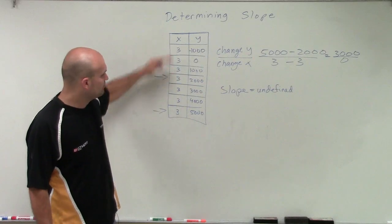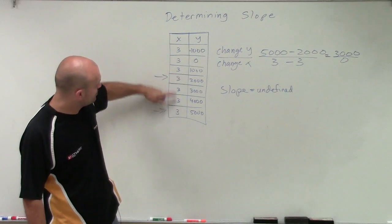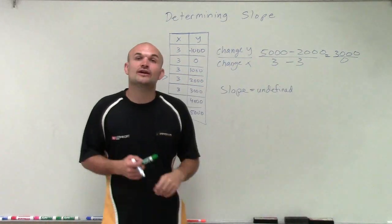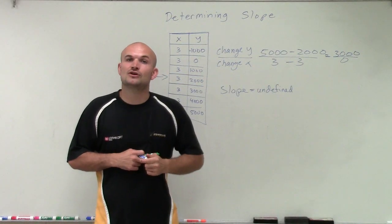And again, it doesn't matter what two points I pick. Because look, no matter what two points I pick, I'm always going to have a difference in my x-coordinates of 0, which will always produce an undefined slope, which will be a vertical line. Thanks.